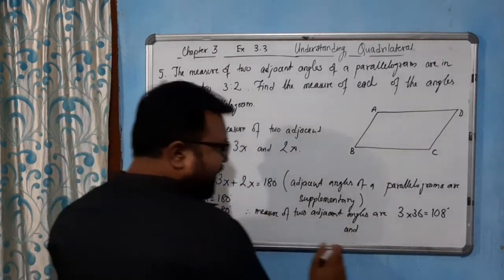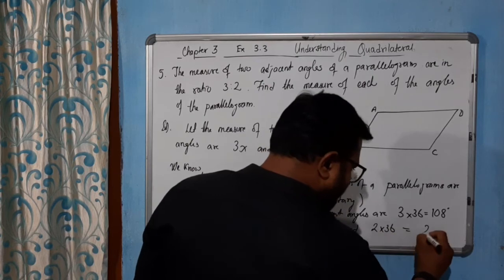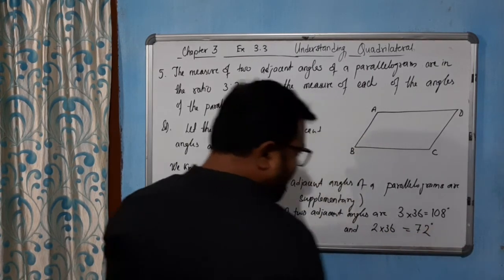And 2 into 36. 2 into 36 is equal to 12, carry 1, 6 plus 1 is 7. 72 degrees.